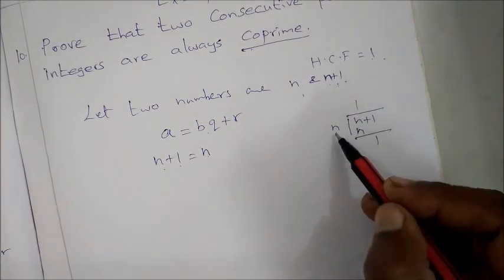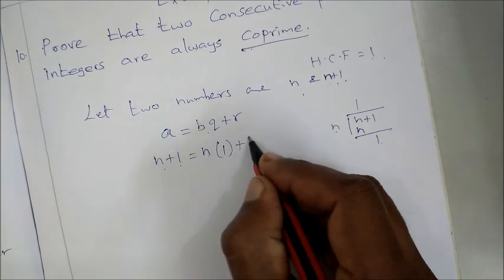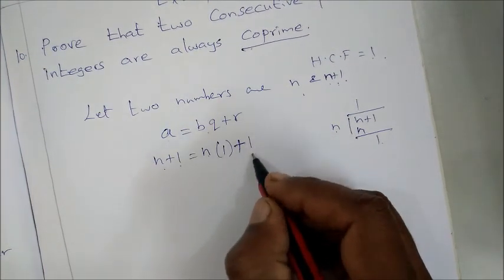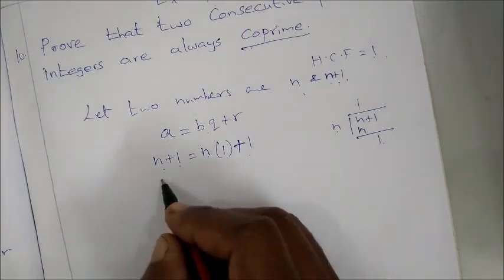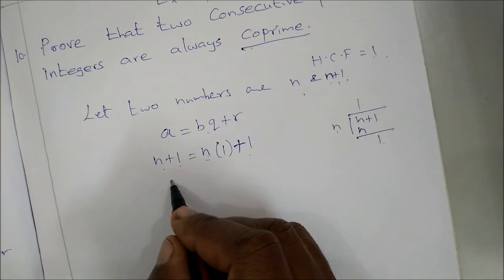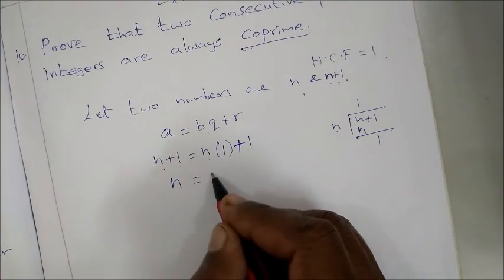We get 1 times n, remainder is 1. So the remainder we get is 1. Next, we divide 1 into n.